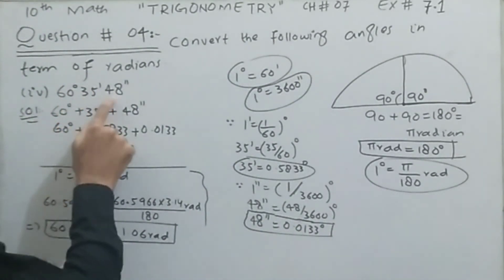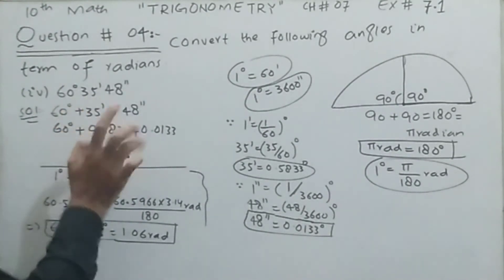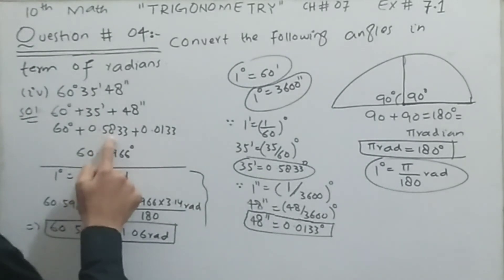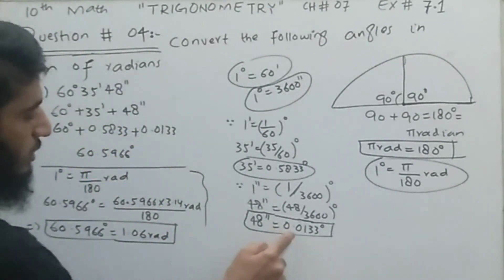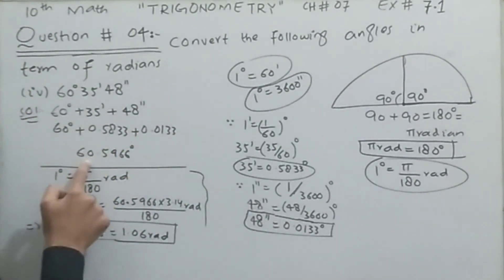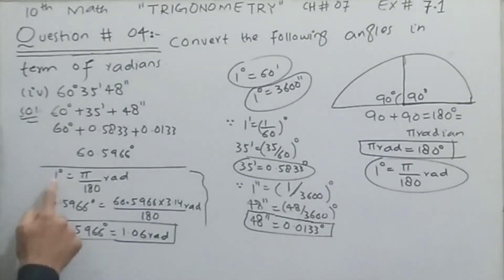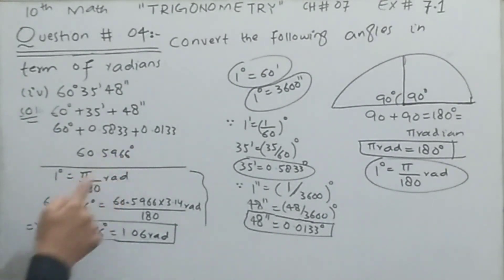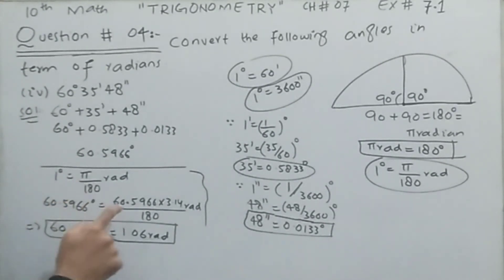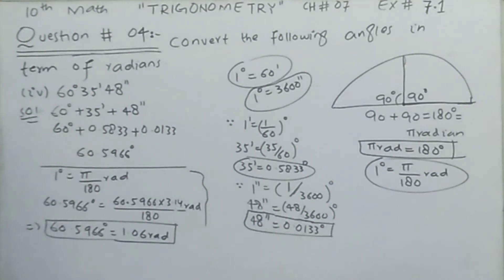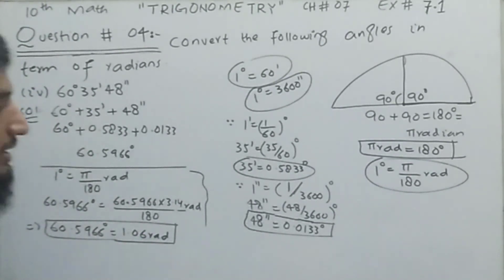So 60 degrees 35 minutes 48 seconds splits into 60 degrees + 35 minutes + 48 seconds, which equals 60 + 0.5833 + 0.0133 = 60.5966 degrees. Now converting to radian using one degree = π/180 radian, multiply both sides by 60.5966. With π = 3.14, dividing 60.5966 × 3.14 by 180 gives us 1.06 radian. So 60.5966 degrees equals 1.06 radian — this is the required result.